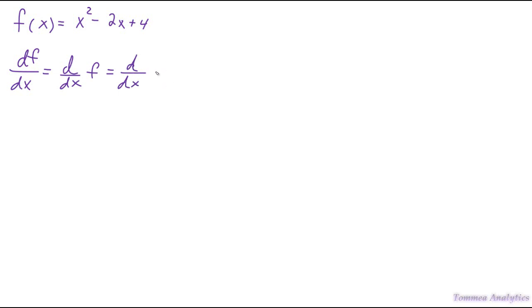The first thing we want to do is write down df/dx. This means that we're going to take the derivative of f with respect to x of the function x² - 2x + 4. This is equal to the same notation — it's just a different way of writing it. This part here makes it more clear on what you're doing to f. In other words, d/dx is acting as an operator on the function f. So further writing that out, we get d/dx of the function x² - 2x + 4.